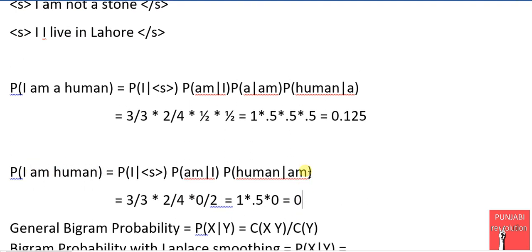So at this situation we definitely suspect that there is something wrong with this general bigram model because as it is apparent from these two sentences, the probability of this sentence should not be 0. It may be less than this but it should not at all be 0.